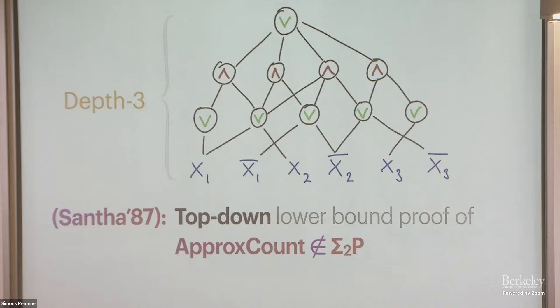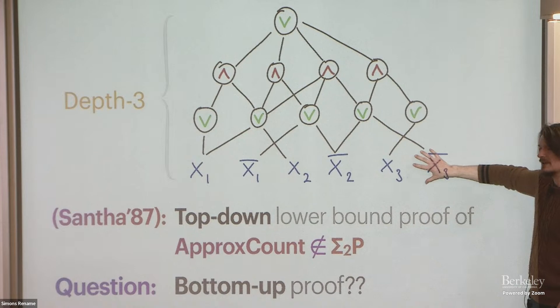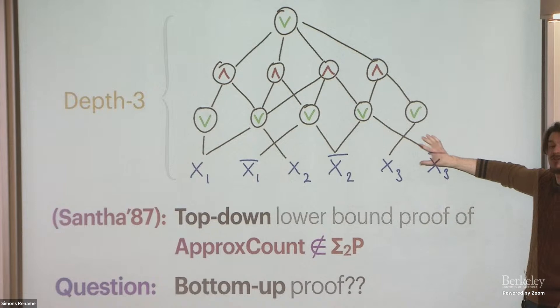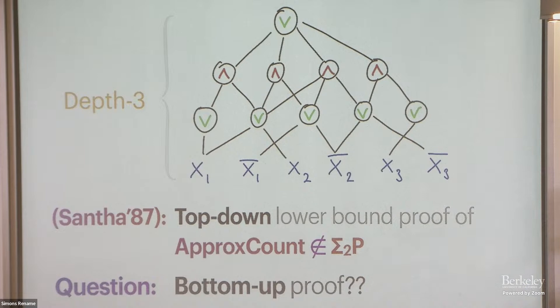And Santha shows this function—you can sort of start analyzing a hypothetical depth-three circuit from the top gate and actually find a contradiction further down. If the circuit is too small, you can't compute this approximate counting problem. So Santha's result is actually not a very well-known result, I don't think, but it's very interesting because it's one of the few circuit lower bounds for which we don't have a bottom-up proof. So bottom-up meaning starting to analyze from the inputs. So think of a random restriction method, so switching lemmas. So we lack such a proof, and I think if you could supply me a bottom-up proof of this old result, we'd be in business, and that would maybe solve the oracle separation question.